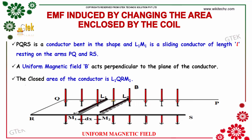Consider a conductor with points P, Q, R, and S which is bent in the shape as shown, and L1 and M1 is the sliding conductor of length L resting on the arms PQ and RS. A uniform magnetic field perpendicular to the plane of the conductor is applied. The closed area of the conductor is L1, Q, and M1.